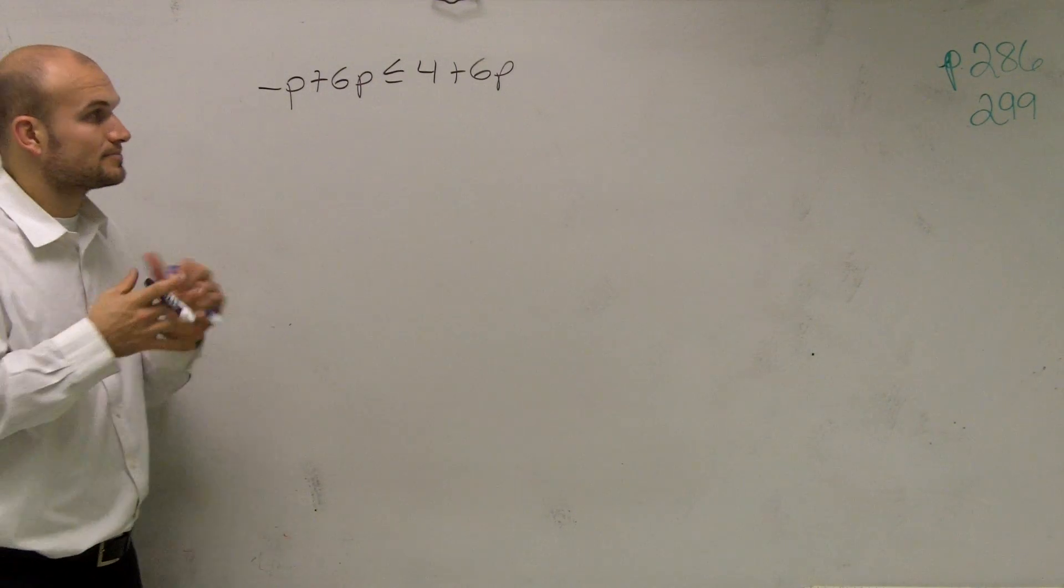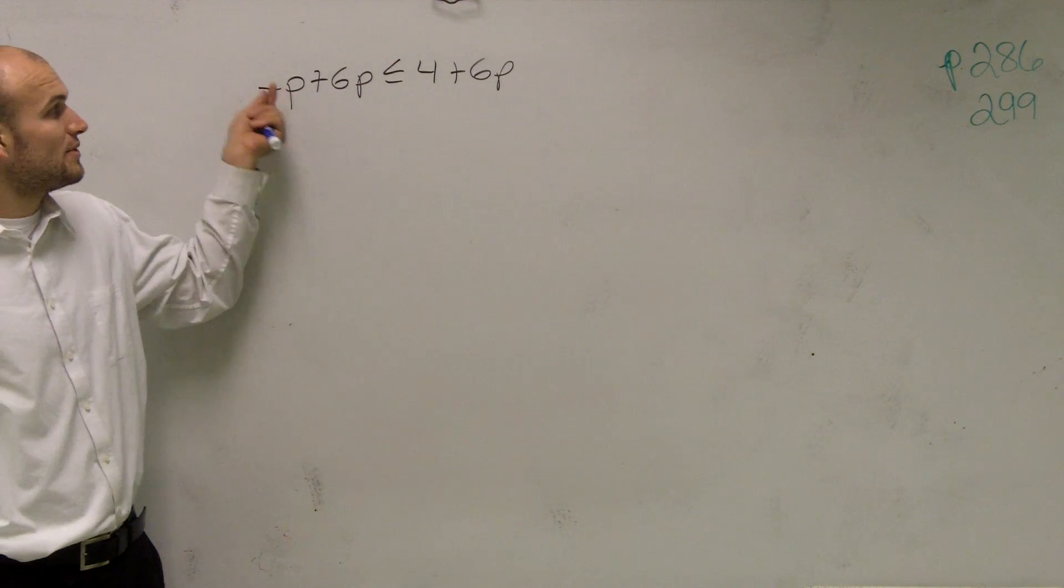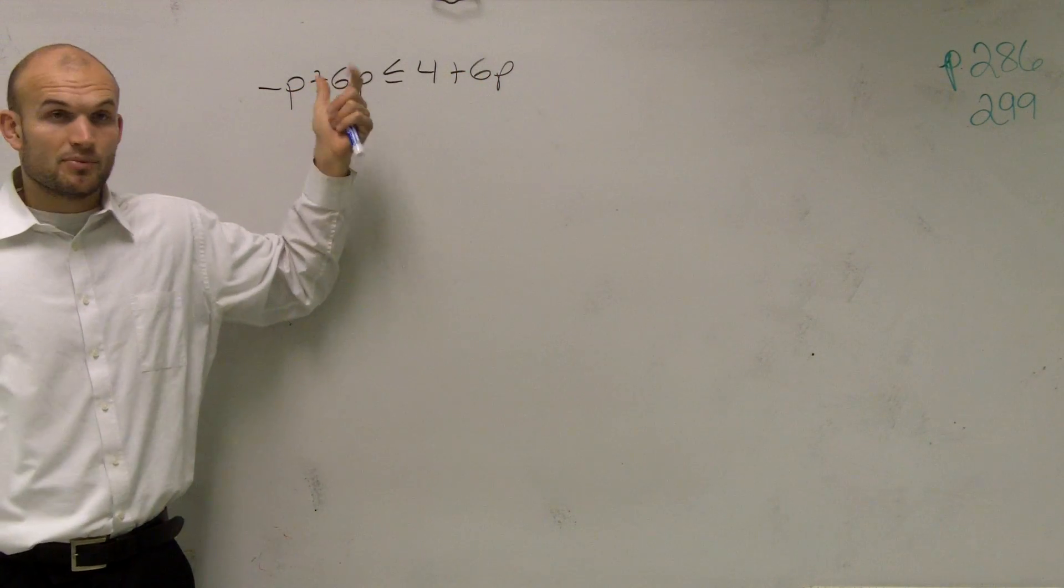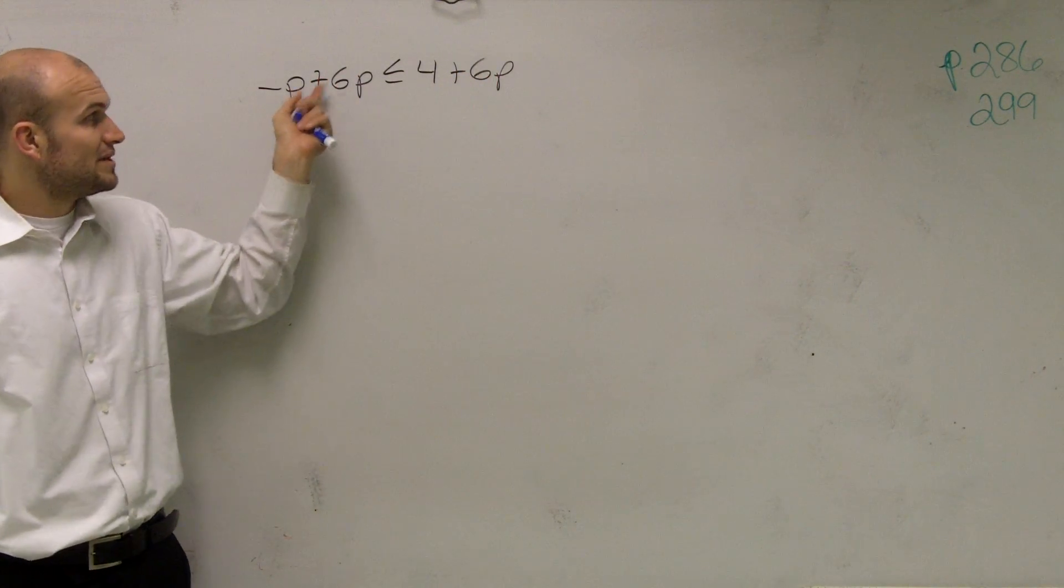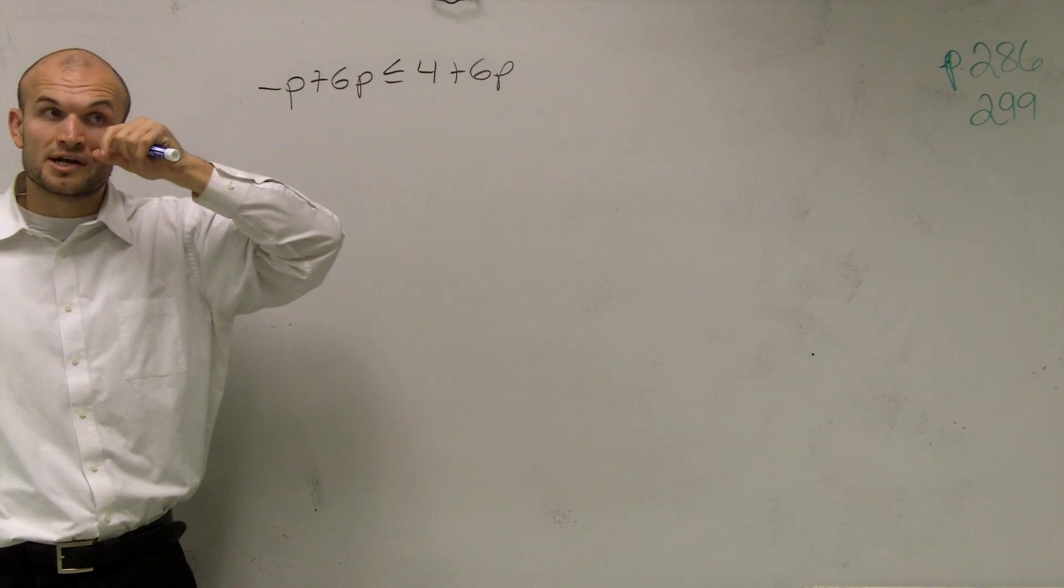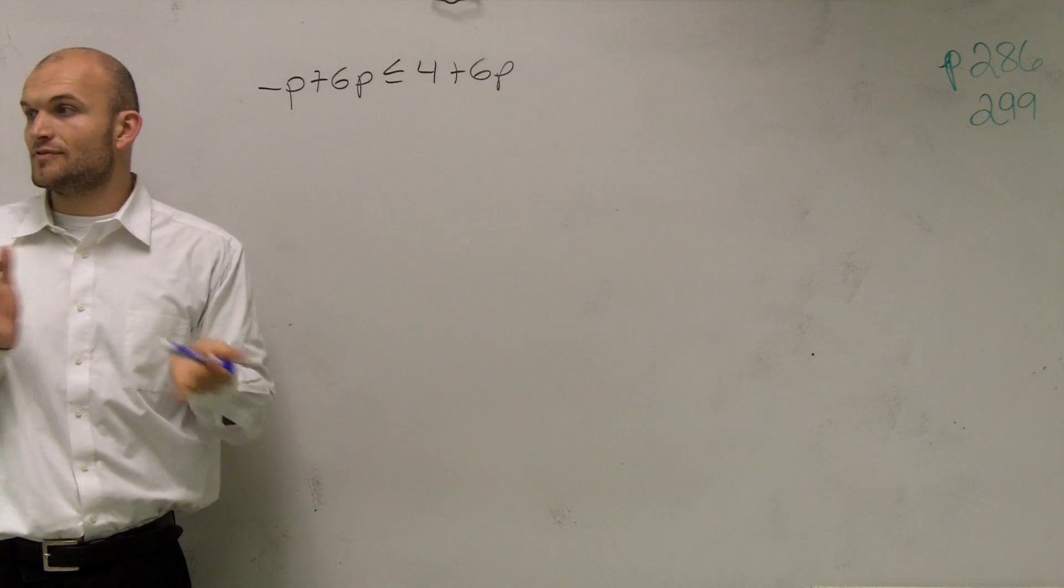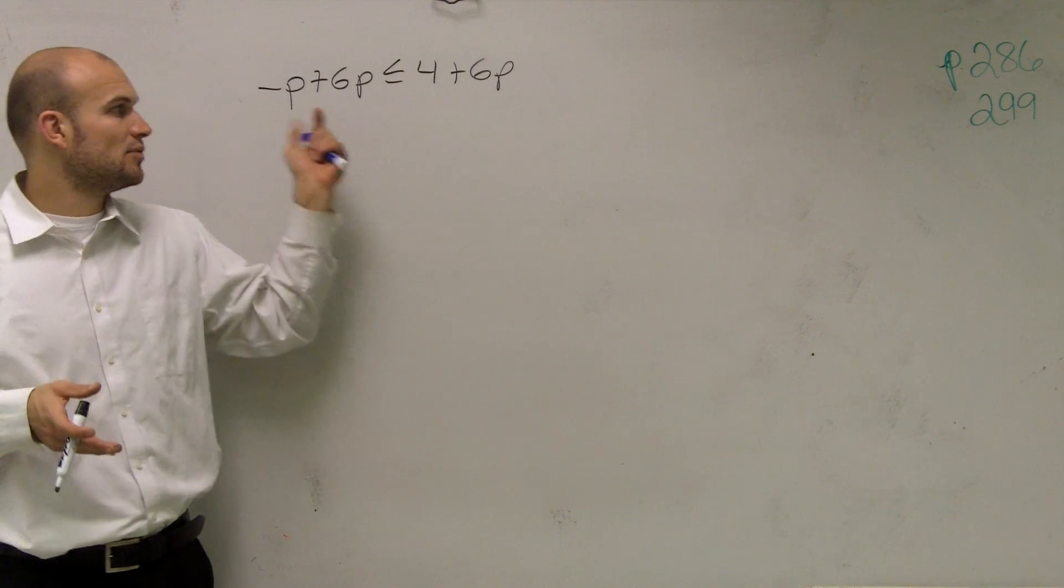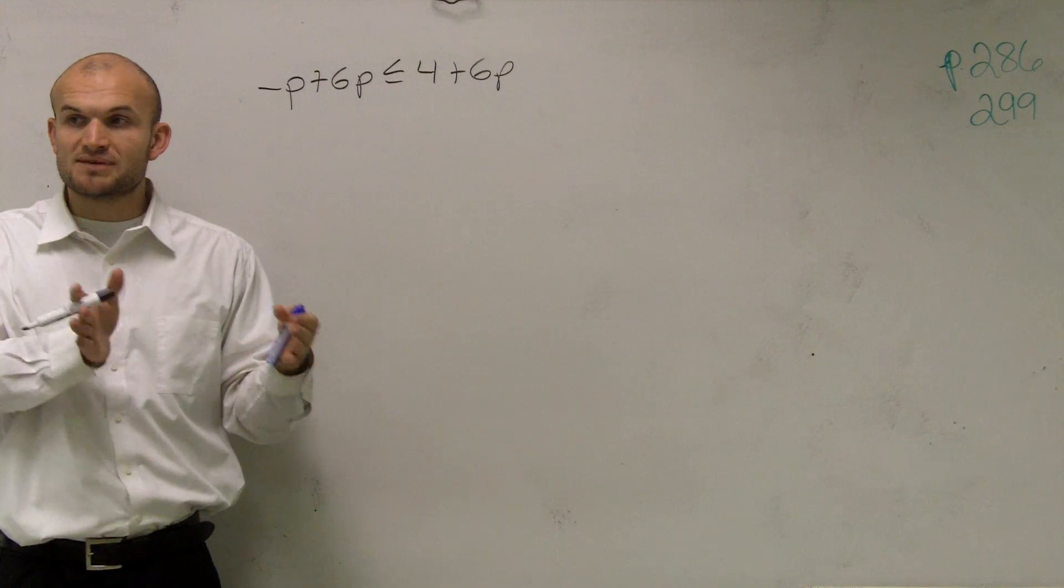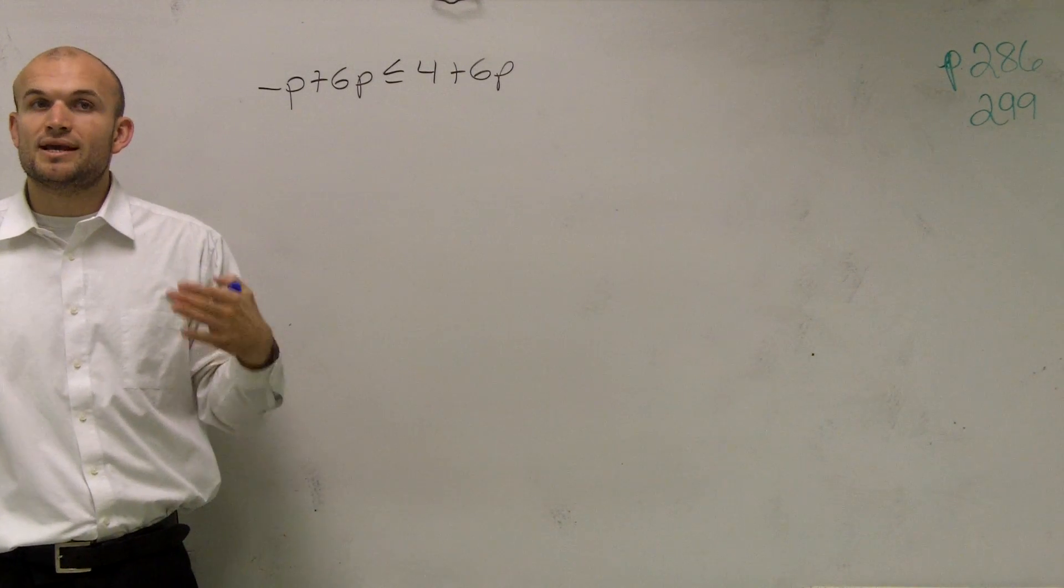So therefore, if you look at this problem, we have three variables. Now, yes, they're all the same variable, but we have three different of them. We have negative p, a positive 6p, and another 6p on the other side of the inequality. So we know we can add and subtract on both sides of inequalities. We also know that when we have like terms on the same side of inequality, we can combine them.